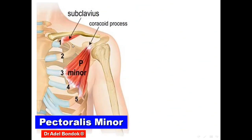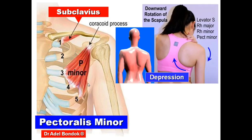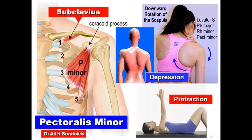Regarding the deep muscles — pectoralis minor and subclavius. Pectoralis minor: origin from the third, fourth, and fifth ribs; inserted into the coracoid process; supplied by the medial pectoral nerve. Its actions are depression of the shoulder or scapula, downward rotation of the scapula, and protraction of the scapula — meaning forward movement of the scapula or shoulder.